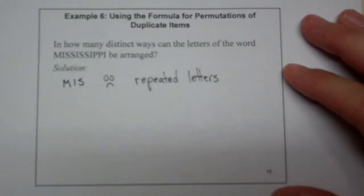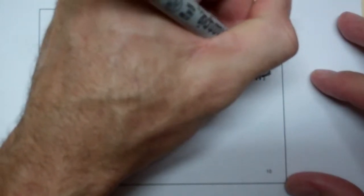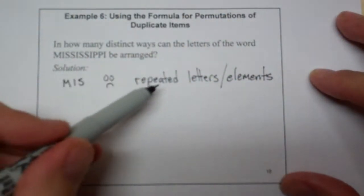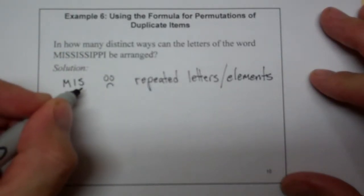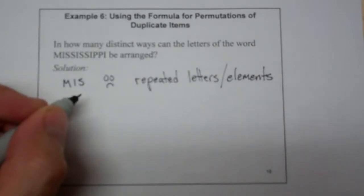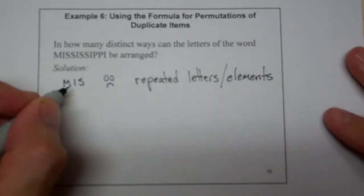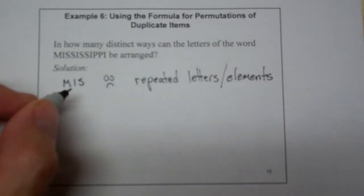And let's go ahead and use the vocabulary from chapter three from our sets and talk about not just repeated letters, but repeated elements. The repeated elements of the set. If you have repeated elements from the set, you can't just use the permutation formula. You got to tweak it in a slight way. So how are we going to tweak it?